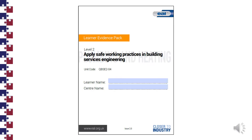We begin with the document Level 2, Apply Safe Working Practices in Building Services Engineering. Nice and simple start — complete your name and the centre name, which is Optionskills. If you are completing the documents by hand, please use black or blue ink. Your writing needs to be legible and do not use a pencil.